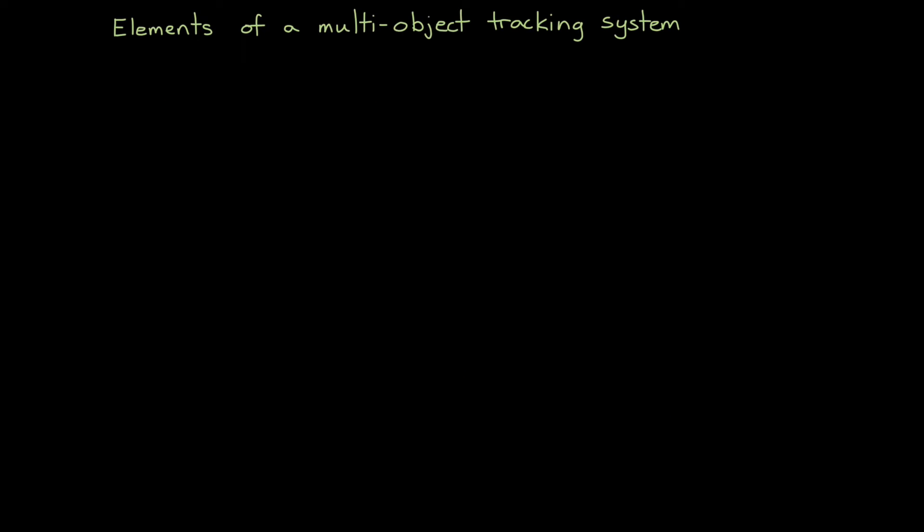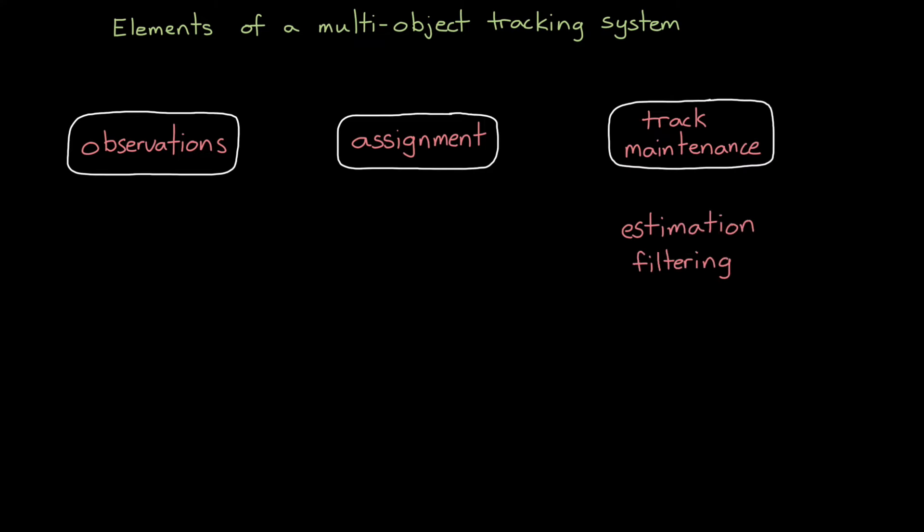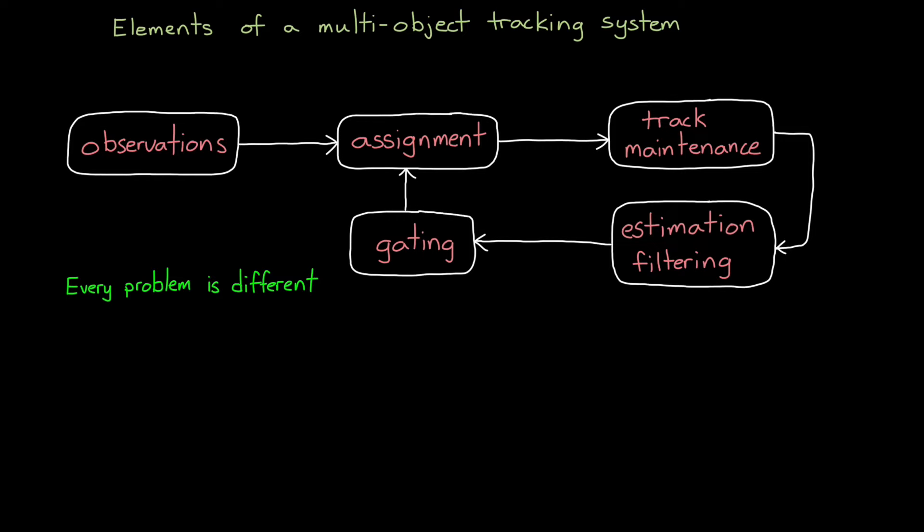Now I'm going to highlight a general outline so that you get an idea of how these problems can be solved. But by no means do I want you to think that there is only one way or one algorithm to get the job done. Every problem is different because they have things like different number of objects, or you have access to different measured data and information, or maybe different expectations on how close the objects will be to each other.